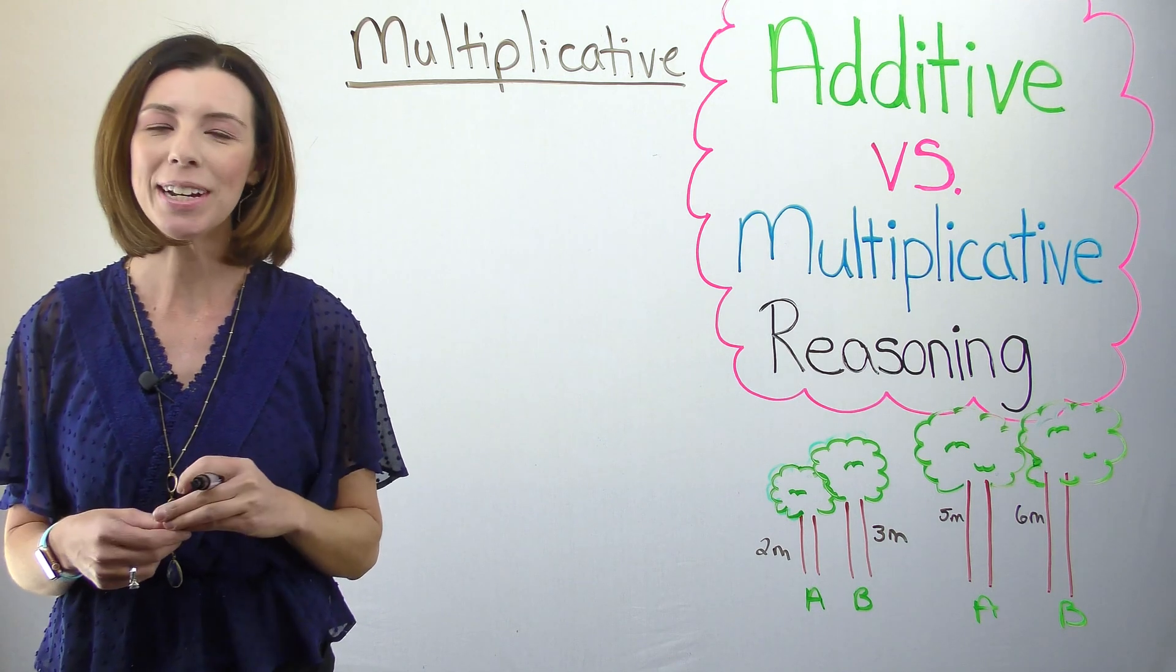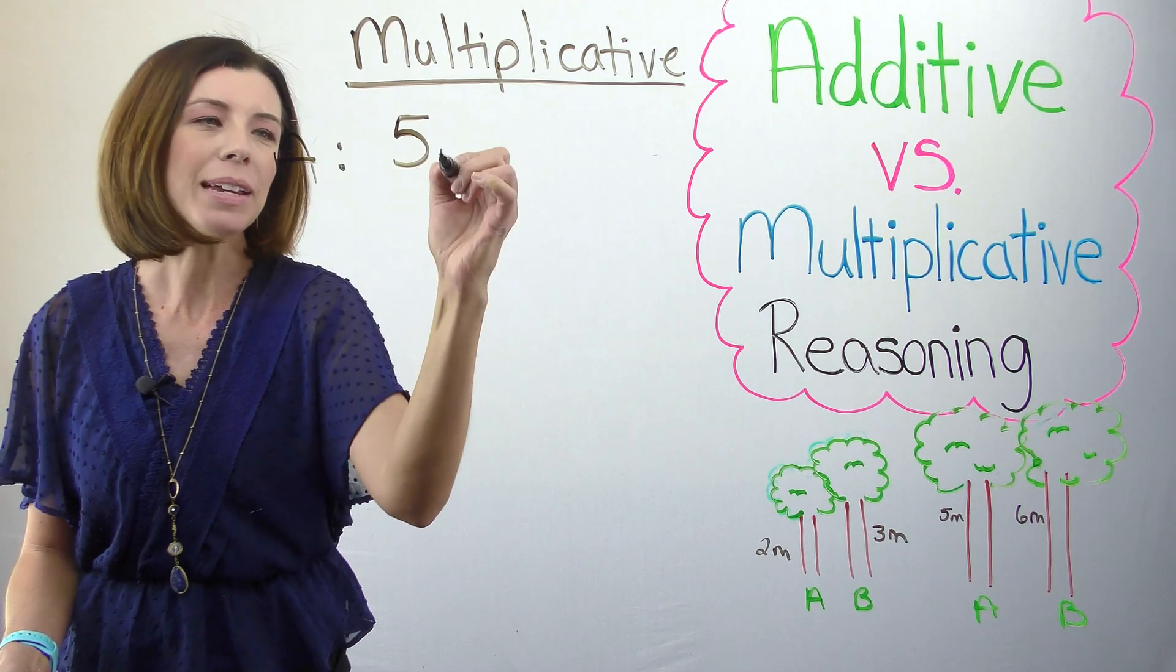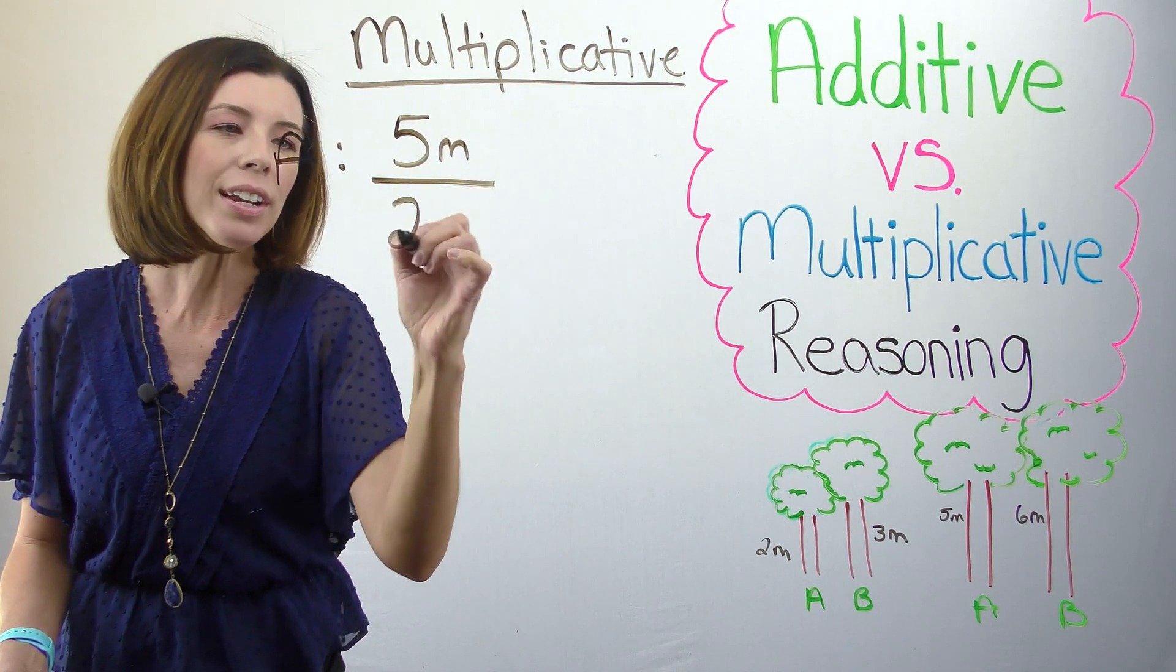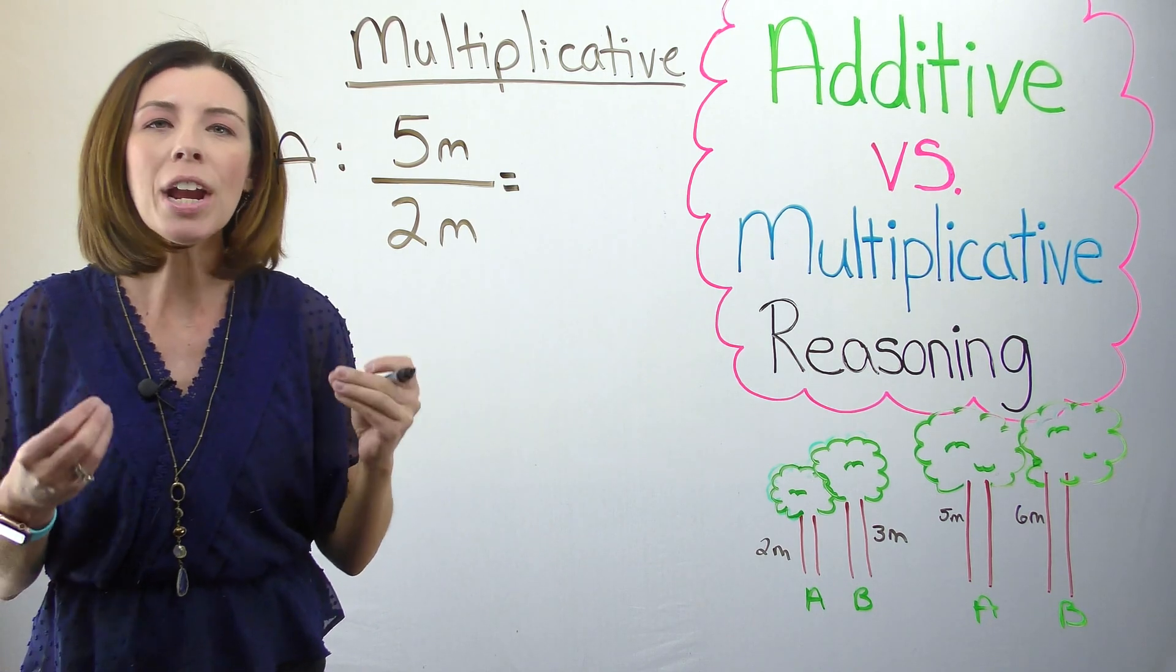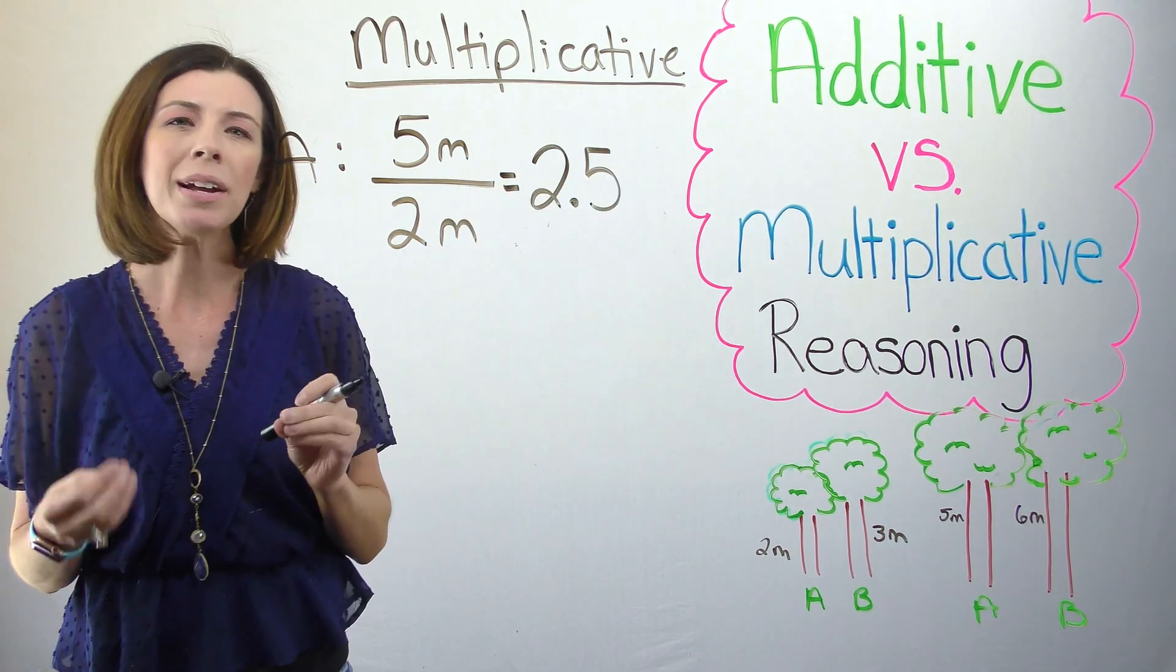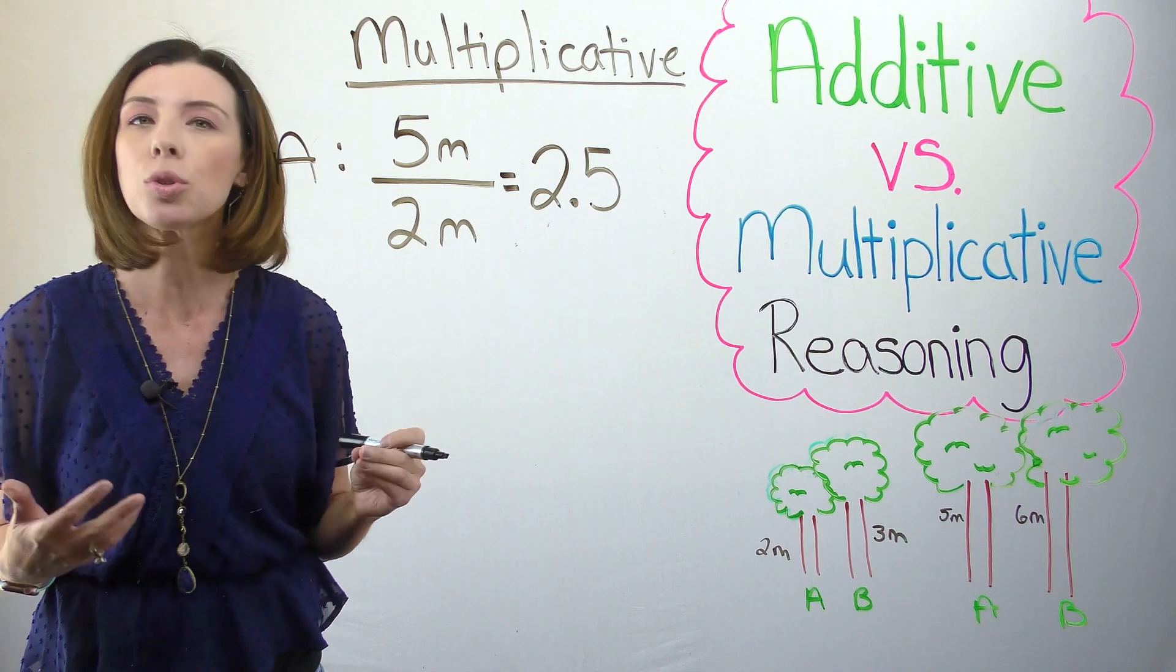In the case of our tree examples, we're really saying that tree A ended at five meters and it started at two meters. This is how I get the change in growth. Notice that I'm not saying two and a half meters. I'm saying it's two and a half times its original size.